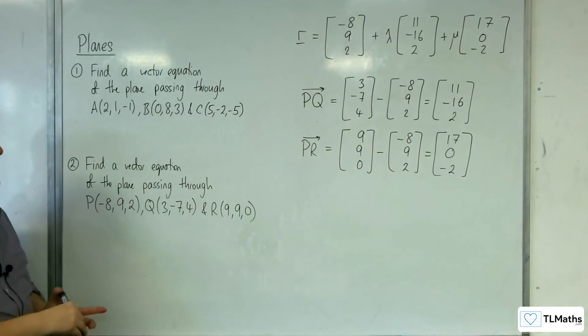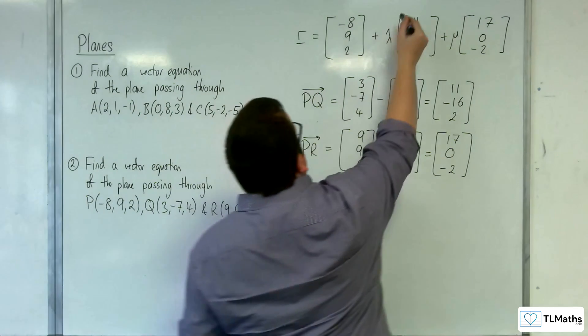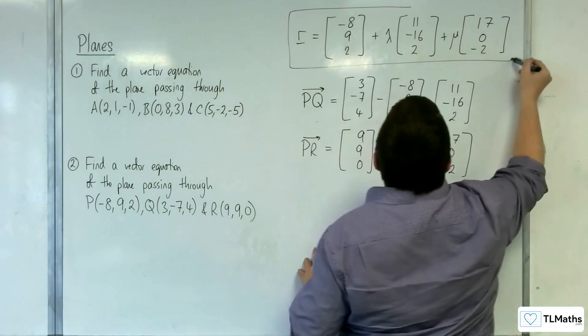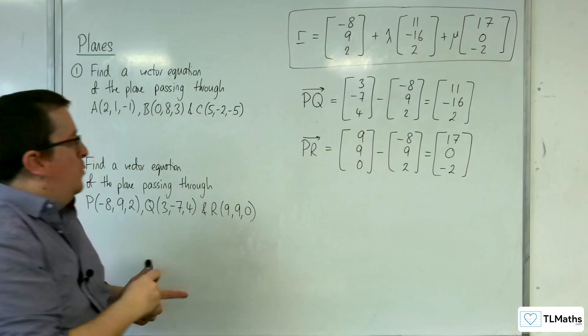Okay. And so that is how we can find the vector equation of the plane going through P, Q, and R.